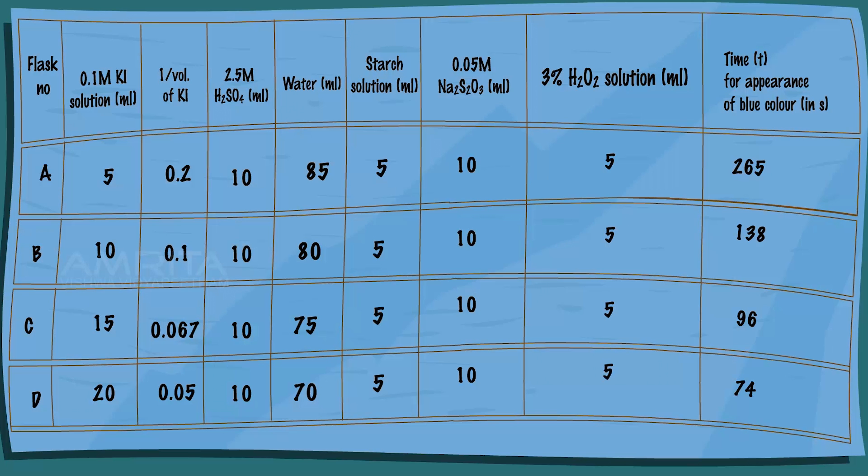Repeat the experiment by adding 5 ml of 3% hydrogen peroxide solution to flasks B, C and D and record the time taken in each case for the blue colour to just appear.